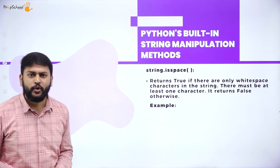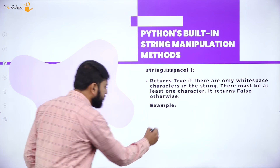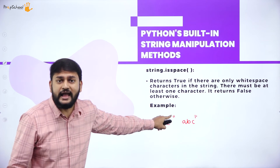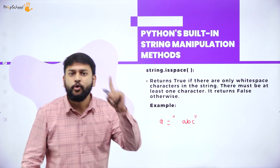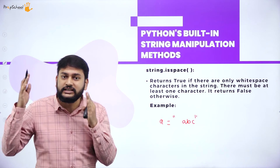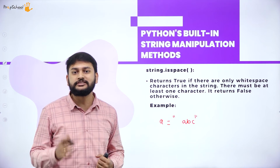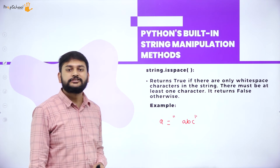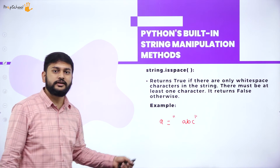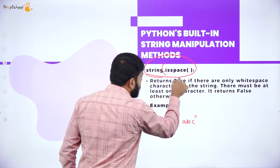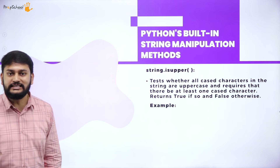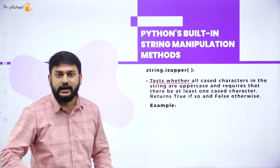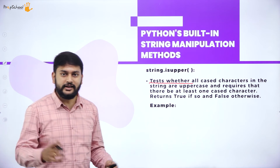isspace() checks whether the string contains a space character. If the string has at least one space character — and spaces are treated as characters in a string — it returns True; otherwise False. Similarly, isupper() tests whether all the characters in the string are uppercase; it returns True if they are, otherwise False.